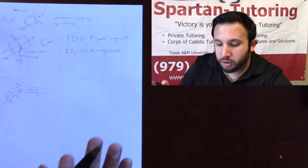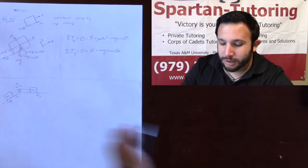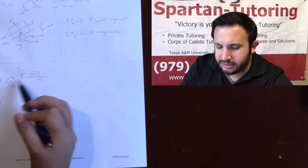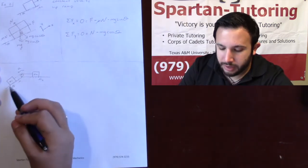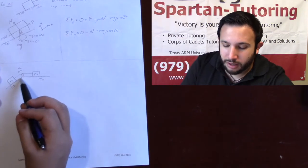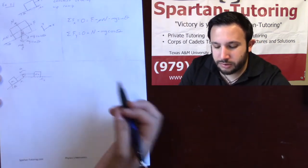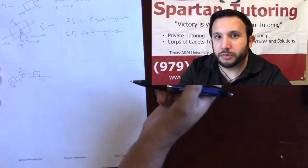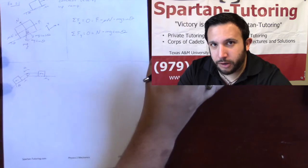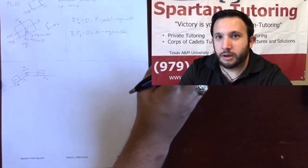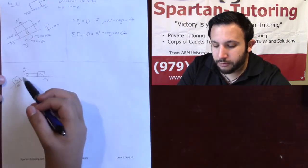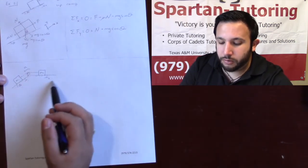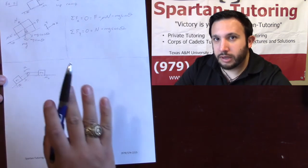Now let's combine the two and see what happens. We have a mass m1 on a ramp and a mass m2 on a flat surface connected by a rope over a pulley. M1 is much larger than m2, so it accelerates down the ramp at some angle. There's friction mu1 on the ramp and mu2 on the flat surface, with a frictionless pulley. Whenever you have multiple objects, do a separate free body diagram and sum of forces for each object individually.